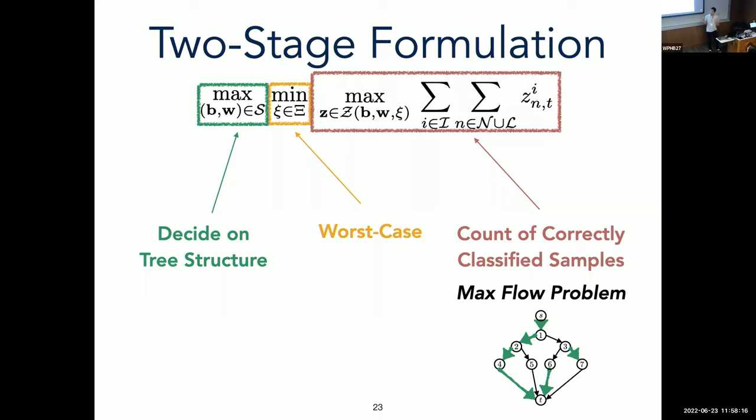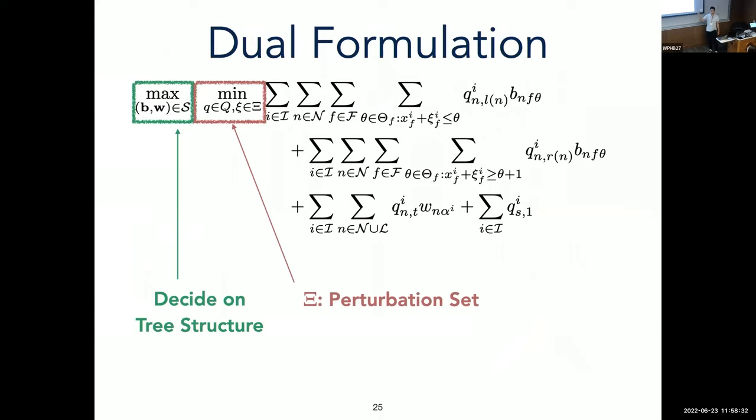So now let's turn this problem into something that we can solve. And to do this, let's dualize this inner maximization problem. And as we may know, the dual of the maximum flow problem is a minimum cut problem. So let's go to our dual formulation. Our dual formulation will have the same outer maximization problem. However, this time, we will have a minimum cut problem within that inner minimization, since we dualized that maximum flow problem into a minimum cut problem. Note here, that strong duality does hold between the maximum flow and minimum cut problems. And so therefore, this formulation is equivalent to our previous formulation.